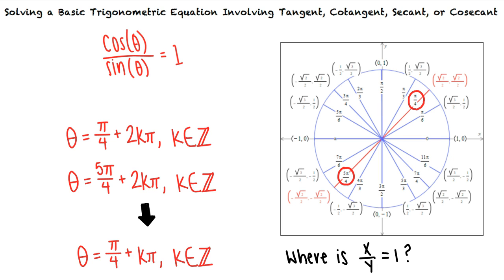As an additional tip, because the period of cotangent and tangent is pi, we could have obtained a condensed solution directly by finding one angle satisfying the equation and adding integer multiples of pi to that angle.